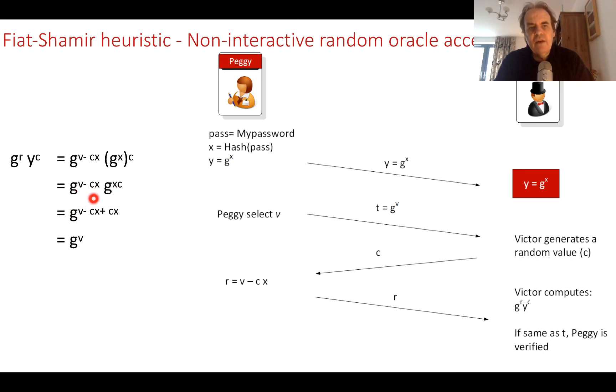When we multiply with the same base, it becomes an addition. So it's g to the power of minus cx plus cx, and we end up with g to the power of v. So only Peggy would be able to generate the right value of r for this to actually work.